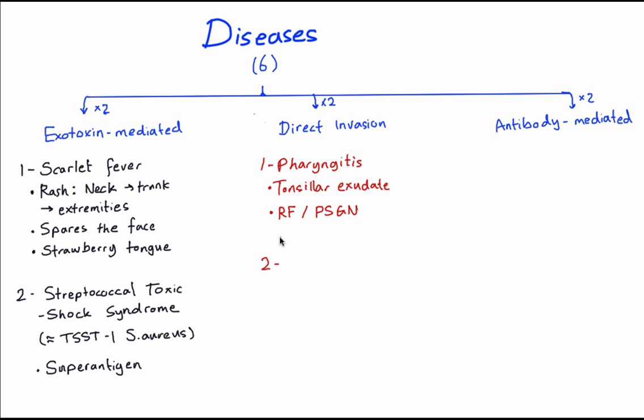The second disease caused by direct invasion is skin infections such as folliculitis or cellulitis, and this may be complicated by necrotizing fasciitis. The important thing to remember about skin infections is that they can cause post-strep glomerulonephritis.